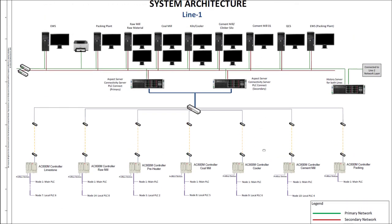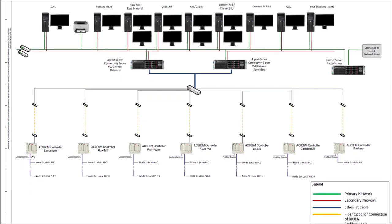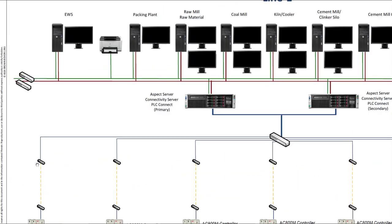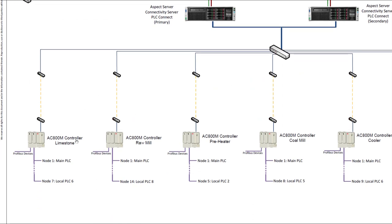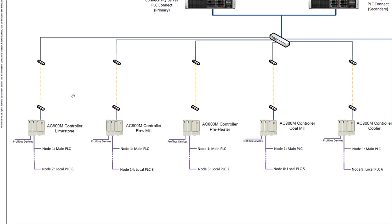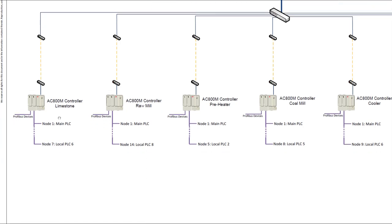I will briefly explain the components in this DCS system. Looking at the PLCs, we have a layer of PLCs. The PLCs used in this case are ABB AC 800M controllers. In a plant — a process manufacturing or discrete manufacturing facility — it is divided into different areas, and each area has its dedicated PLC controller. The valves, actuators, sensors, machines, and induction motors operated in a specific area, such as the limestone crusher, are interfaced with their relevant PLC.